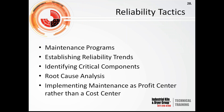What can you do to approach and increase reliability? One approach is how you look at your maintenance programs. Another is establishing reliability trends so you can determine a baseline and how to improve. Also important are identifying critical components within your system, decreasing potential for downtime caused by lead times on critical components, doing root cause analysis when failures occur, and implementing maintenance as a profit center rather than a cost center.